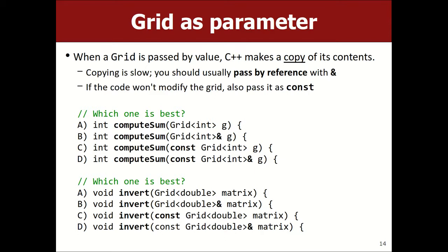Remember to pass collections by reference. Another data type to pass by reference is a file stream — like an ifstream — because you don't want to make multiple copies of the file reader as you go through your code. A student asks: do you put const in the prototype as well? Yes — you have to put const both in the prototype with the semicolon and in the body of the function. If they mismatch, you'll get a confusing error like 'symbol not found for architecture x86_64' without a line number.